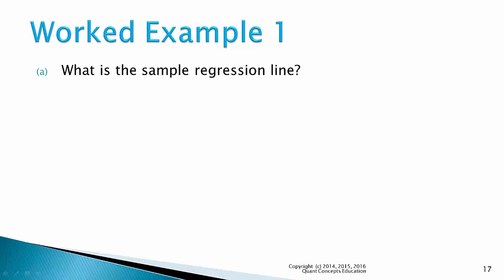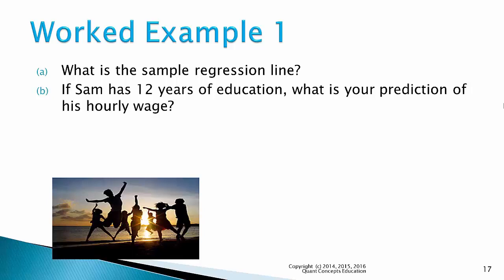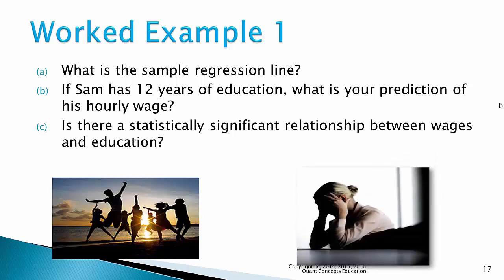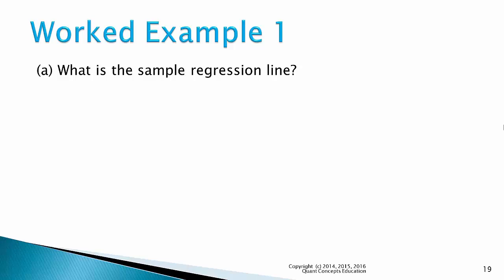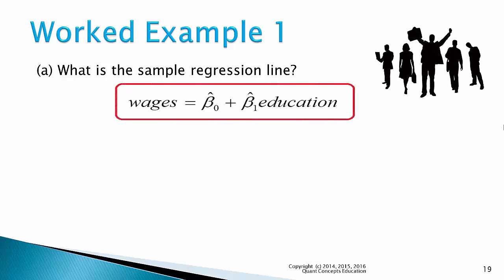Part A: what is the sample regression line? We're dealing with a sample regression because we're conducting this analysis on a sample of 40 randomly selected individuals. Recall that the sample regression line looks like this — the beta coefficients have hats on them as they are sample estimates of the population regression line. Beta hat 0 is the intercept term, referring to the point at which the sample regression line intercepts the y-axis.